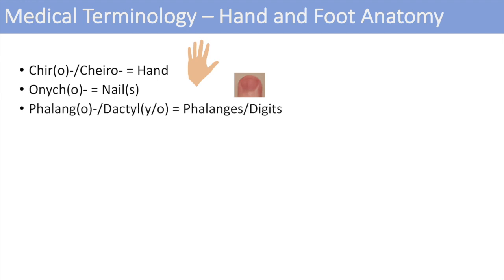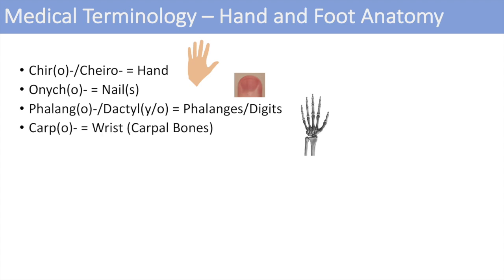The next one is phalangeo, dactylae, or dactylo, which all stand for the phalanges or the digits. You might have heard of polydactyly — having too many fingers or more than the average number of fingers. The next one is carp or carpo, which denote the wrist, specifically the carpal bones. The next one is metacarp, which denotes the metacarpals or the hand bones.